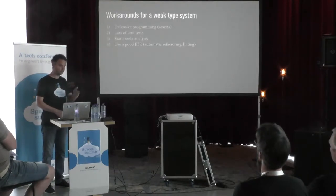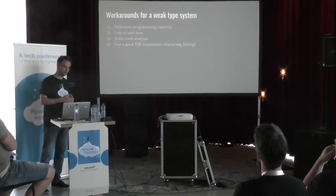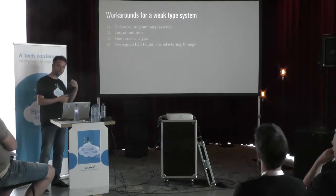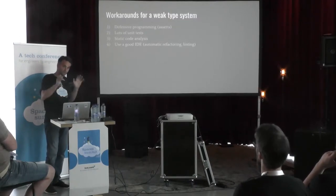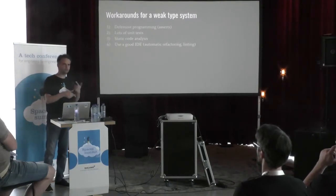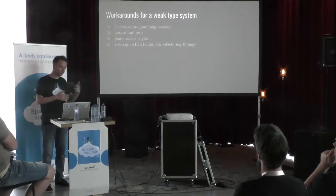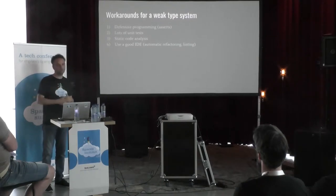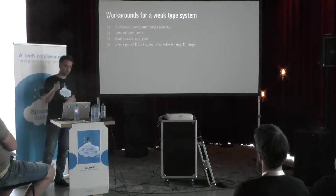So what people do is use workarounds. You do defensive programming — lots of assertions. When you receive a product, you check: does it have a title property? Because the compiler is not going to warn you. You can also write unit tests to check all these properties, or use static code analysis and a good IDE. These tools go through your code and try to determine where variable a is a boolean, where it's an integer, where it's a string, and tell you: hey, you're trying to use it as a number but it's actually a string in this part of the code.